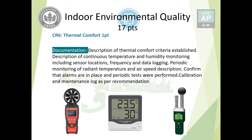For documentation, the handheld devices shown include one for mean radiant temperature, one for airspeed, and a digital sensor for temperature and humidity. Documentation must include the thermal comfort criteria established, continuous temperature and humidity monitoring with sensor locations on drawings, frequency of data collection and logging, periodic monitoring of temperature and airspeed, alarm procedures and SOPs, and a calibration and maintenance log per manufacturer recommendation.